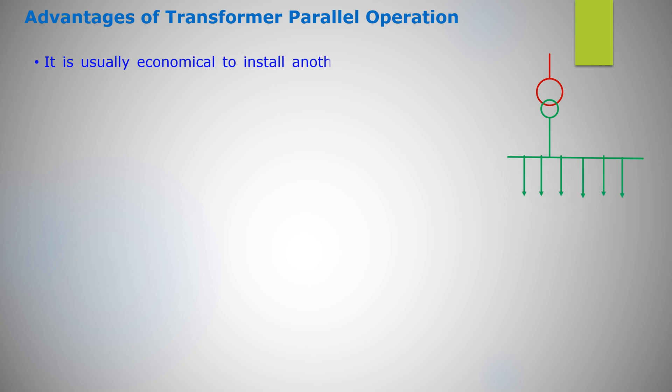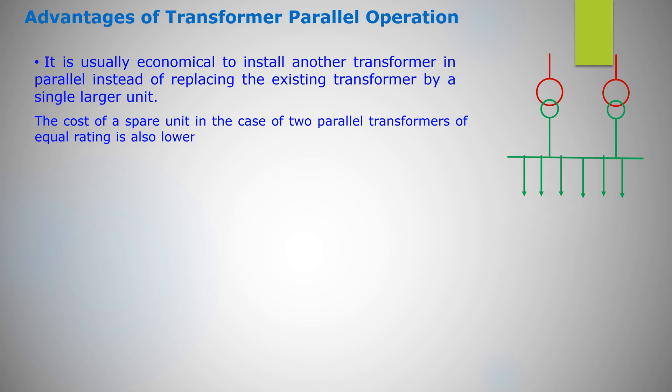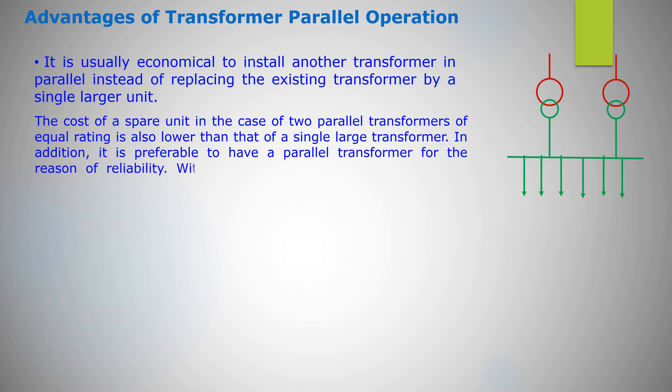Advantages of transformer parallel operation: It is usually economical to install another transformer in parallel instead of replacing the existing transformer by a single large unit. The cost of a spare unit in the case of two parallel transformers of equal rating is also lower than that of a single large transformer. In addition, it is preferable to have a parallel transformer for the reason of reliability. With this, at least half of the load can be supplied with one transformer out of service.